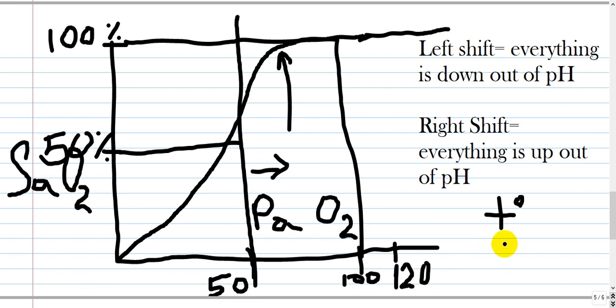CO2 is also going up. Hydrogen level going up. 2,3-diphosphoglycerate going up. Everything out of pH. High hydrogen level means low pH.